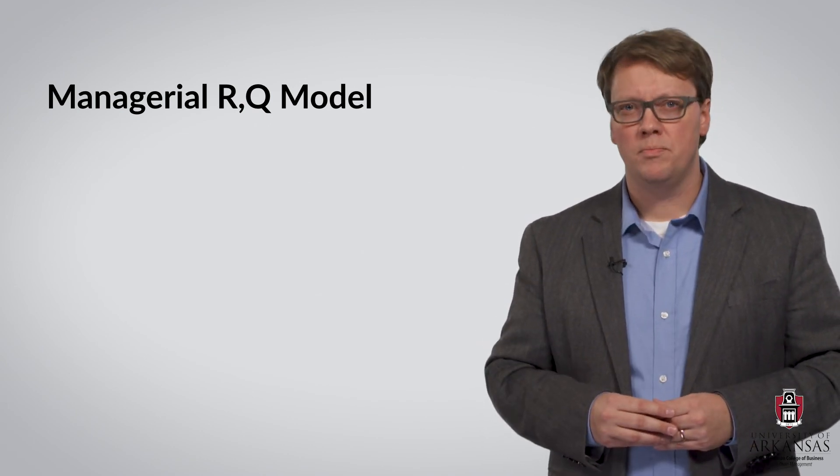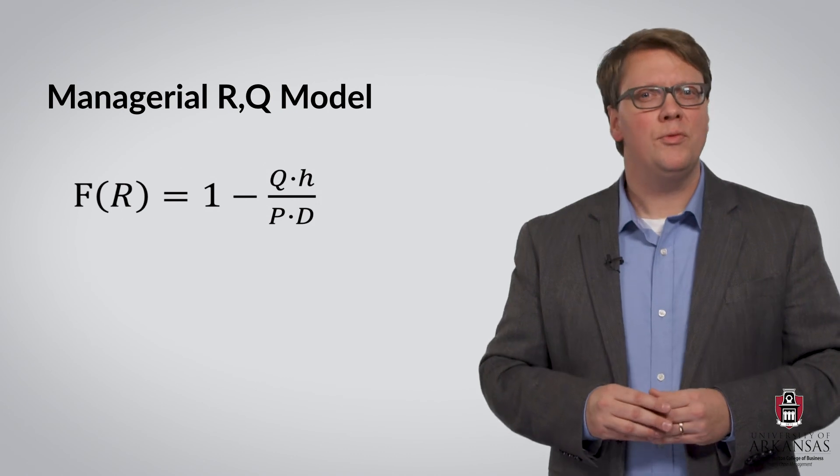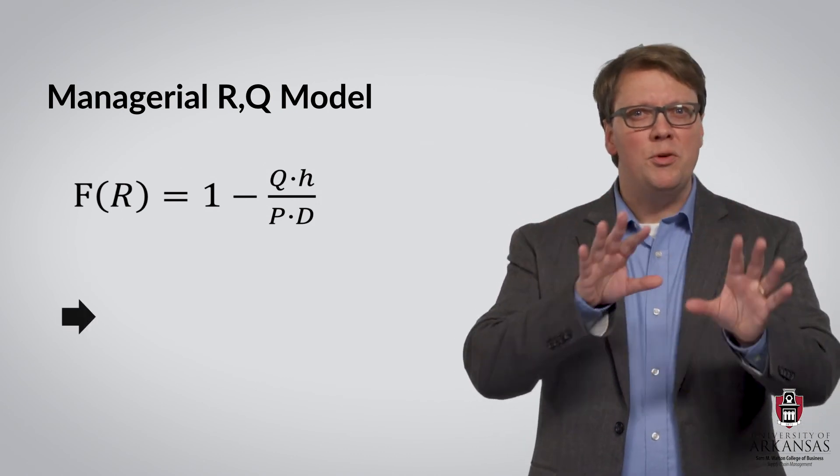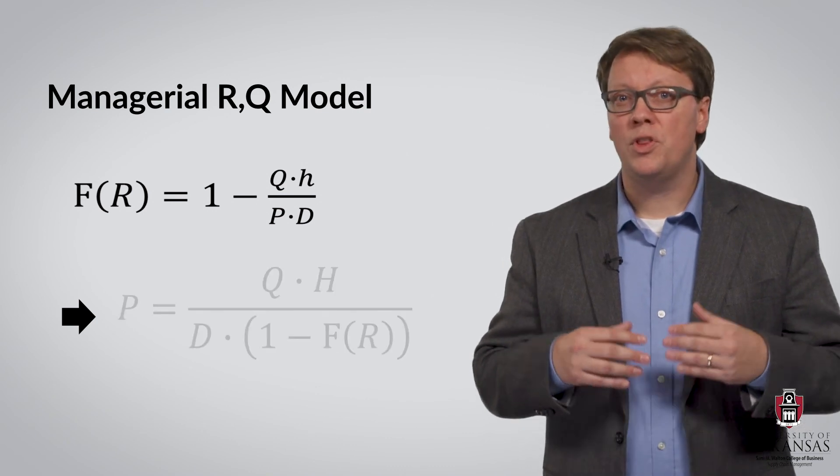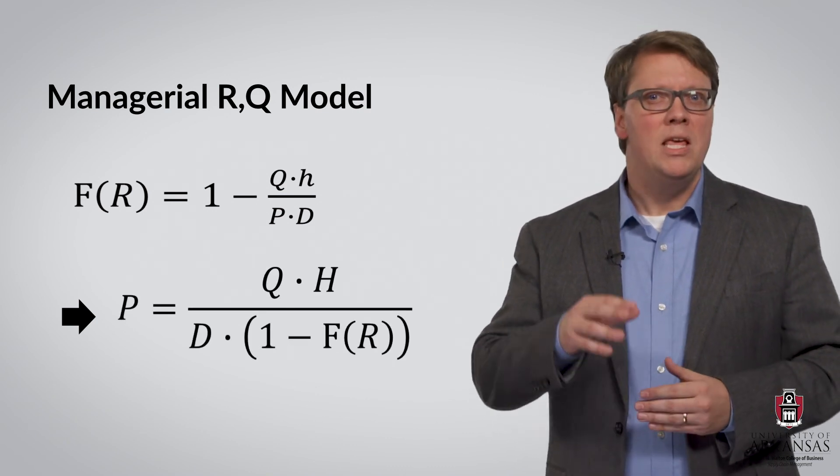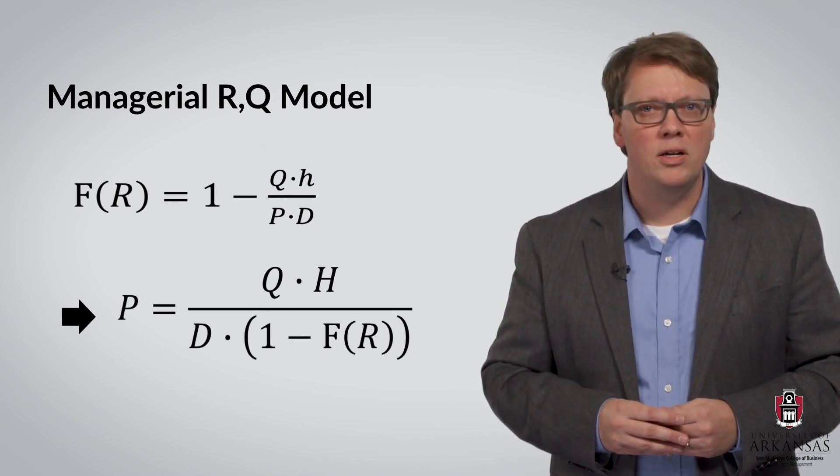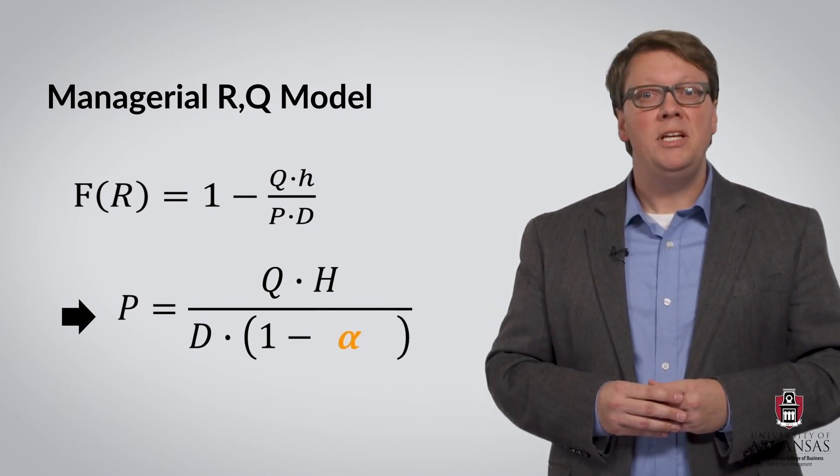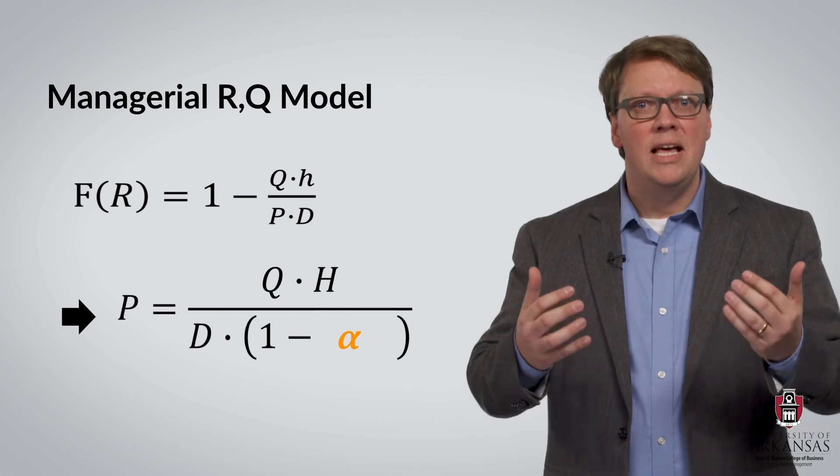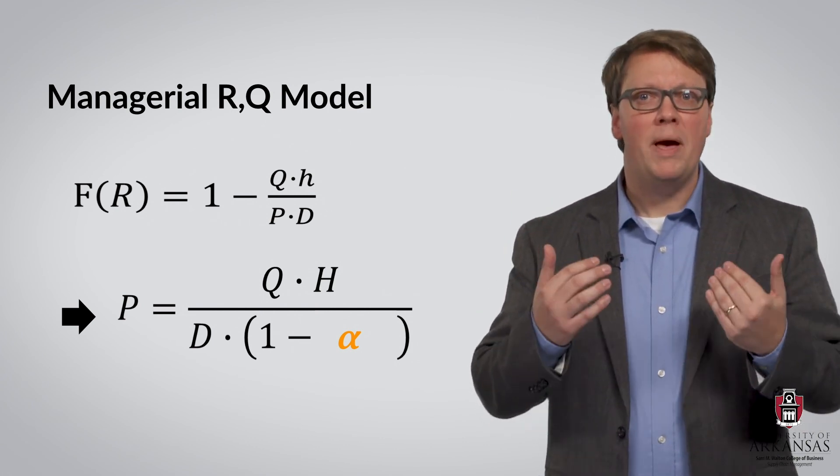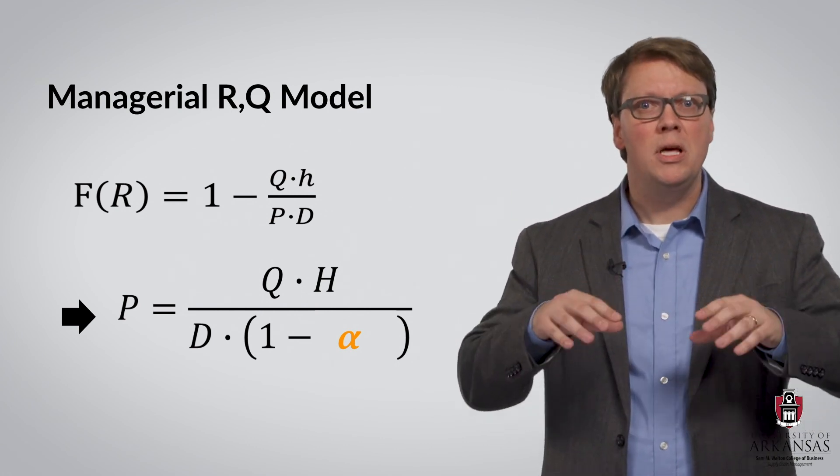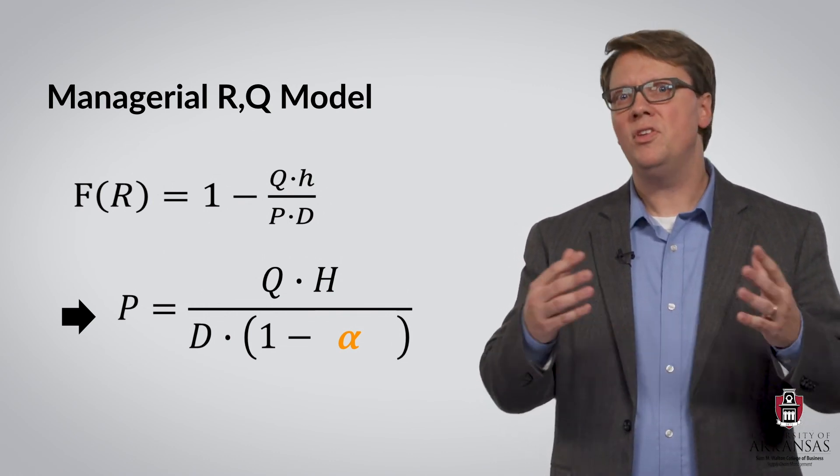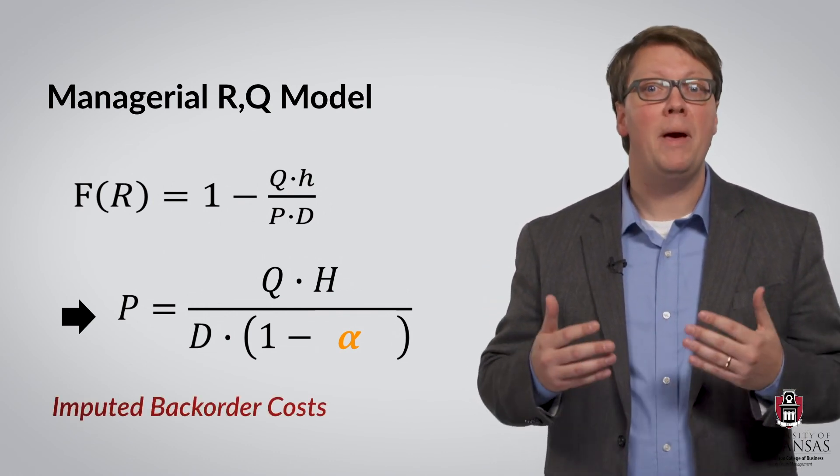The idea is quite simple. Remember the formula for the optimal in-stock probability? Let's rearrange this and solve for the backorder cost P, keeping in mind that F of R is simply the in-stock rate alpha. This means that we can calculate an implicitly assumed backorder cost for a given managerially determined in-stock rate. This is what we call the imputed backorder cost.